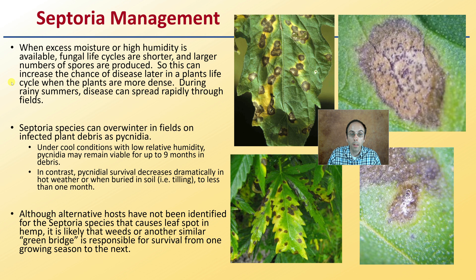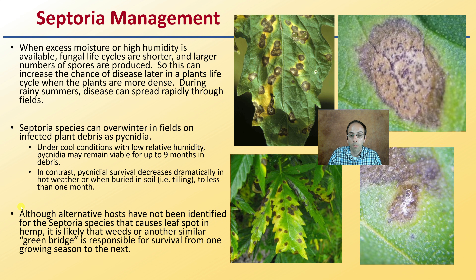During rainy summers, disease can spread rapidly through fields in outdoor applications. Septoria species can overwinter in fields on affected plant debris. Under cool conditions with low relative humidity, the pycnidia can remain viable for up to nine months in debris. In contrast, pycnidia survival decreases dramatically in hot weather and when buried in soil — for example, tilling for less than one month can be a way to reduce the life expectancy of septoria.